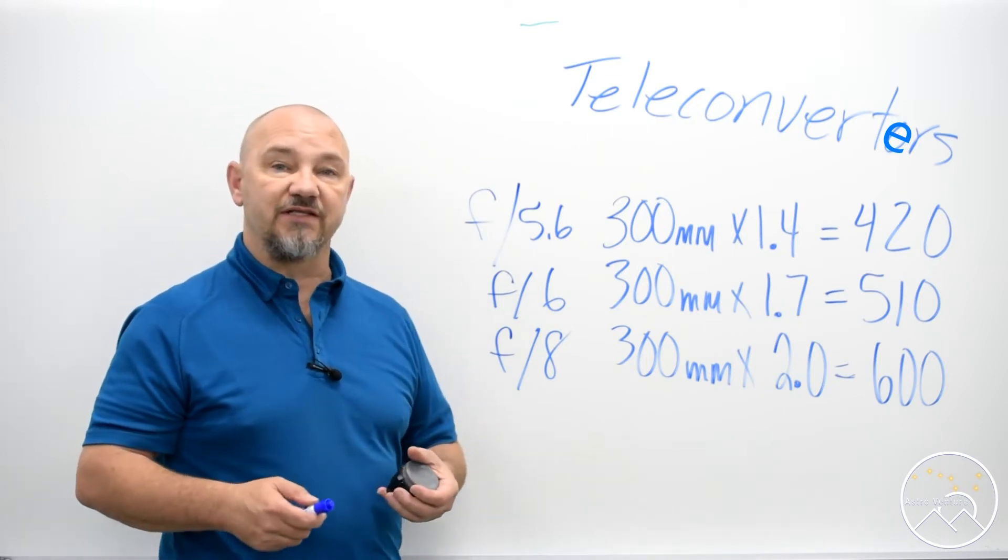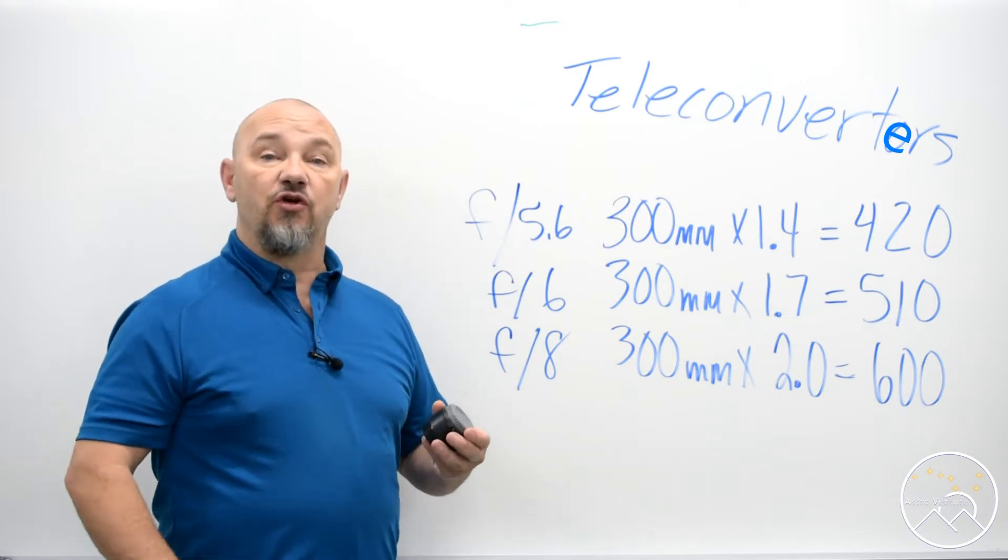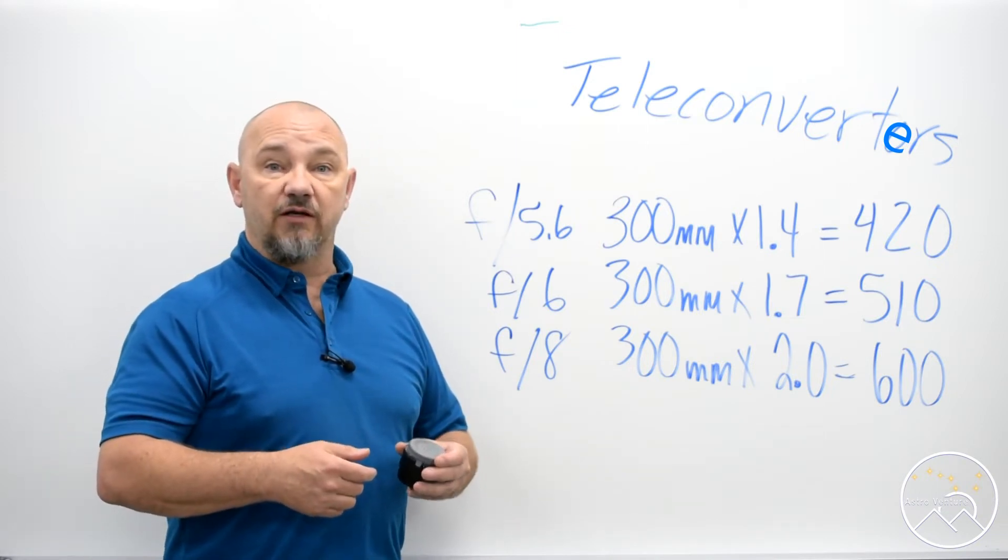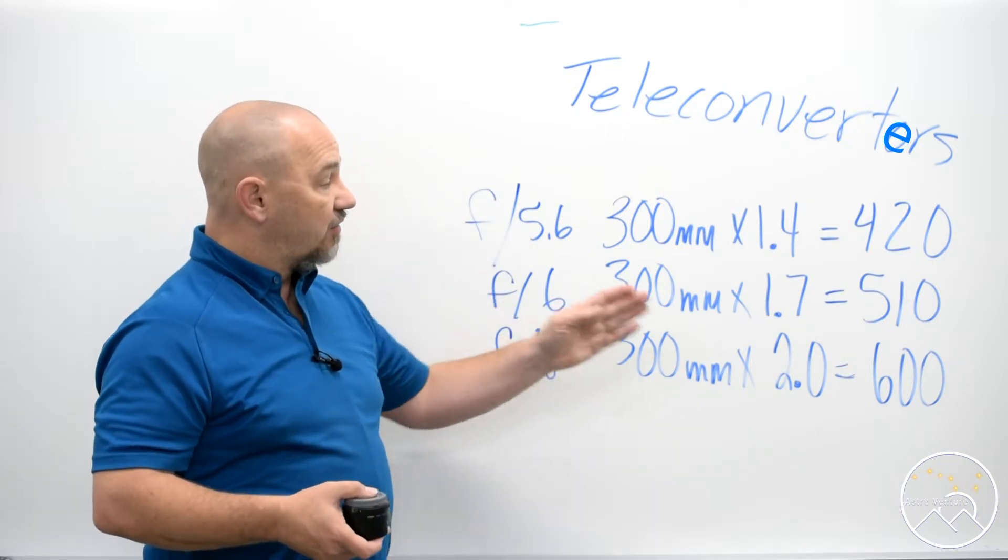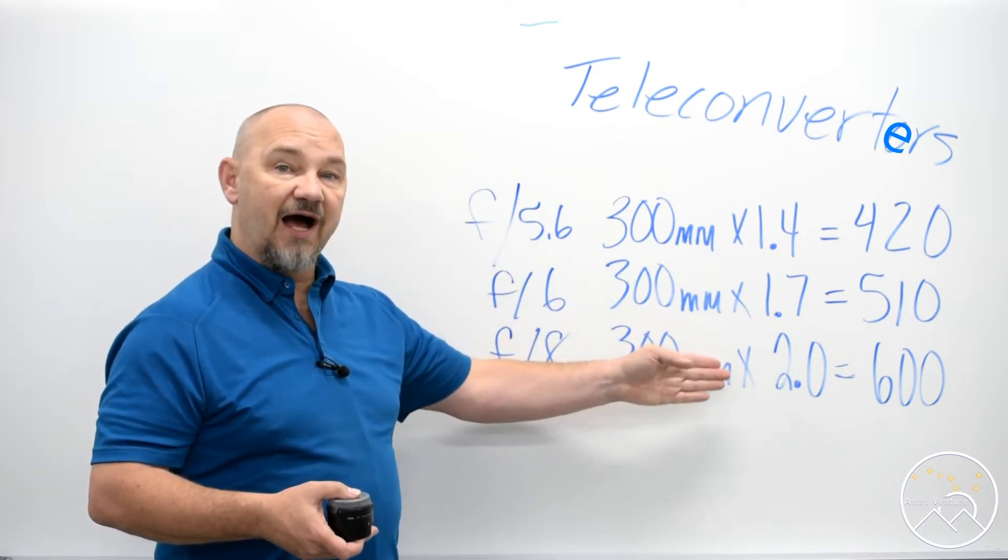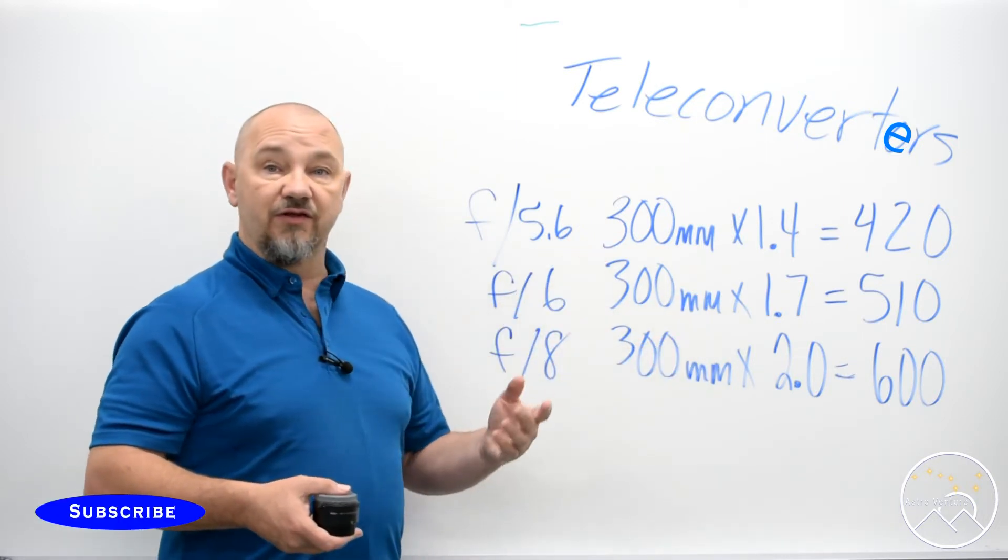The other thing you have to consider with this is that the greater the magnification the more you're going to soften the image. Now with that said, a 2x teleconverter you're going to notice that softening the most. 1.4 the least.